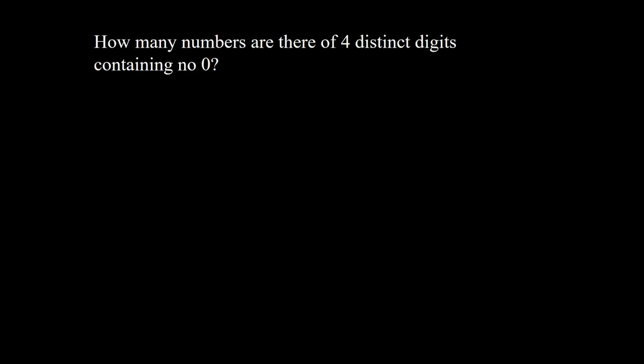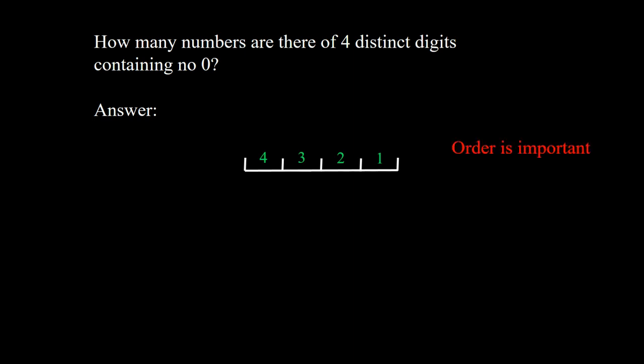Example 2: How many numbers are there of 4 distinct digits containing no 0? We have 4 places. The number 1234 is not the same as 4321, so the order is important. Because the digits should be distinct, repetition is not allowed. So this is a permutation problem.